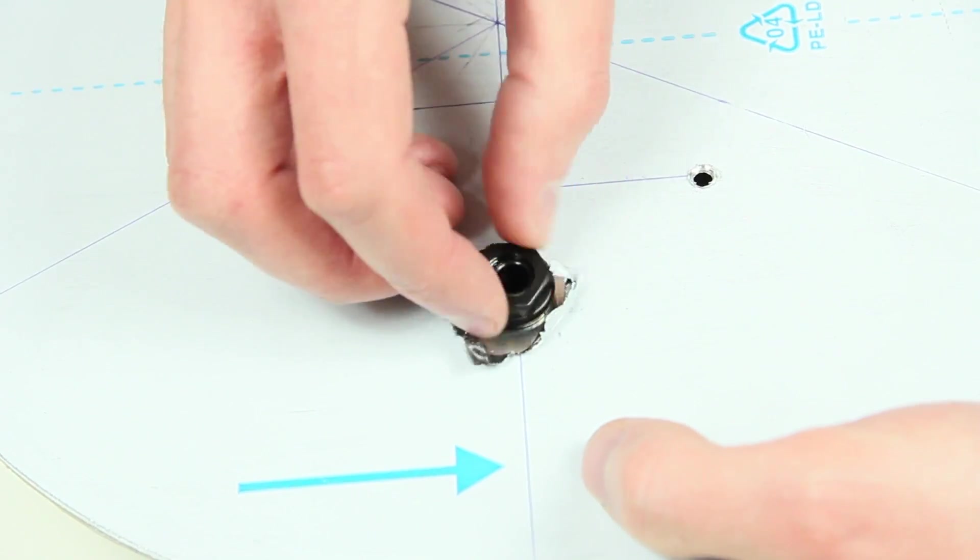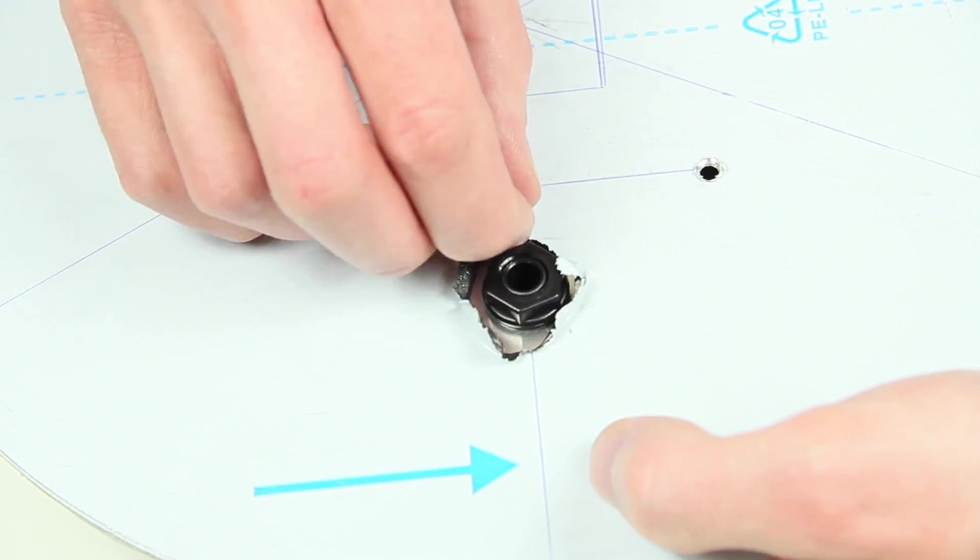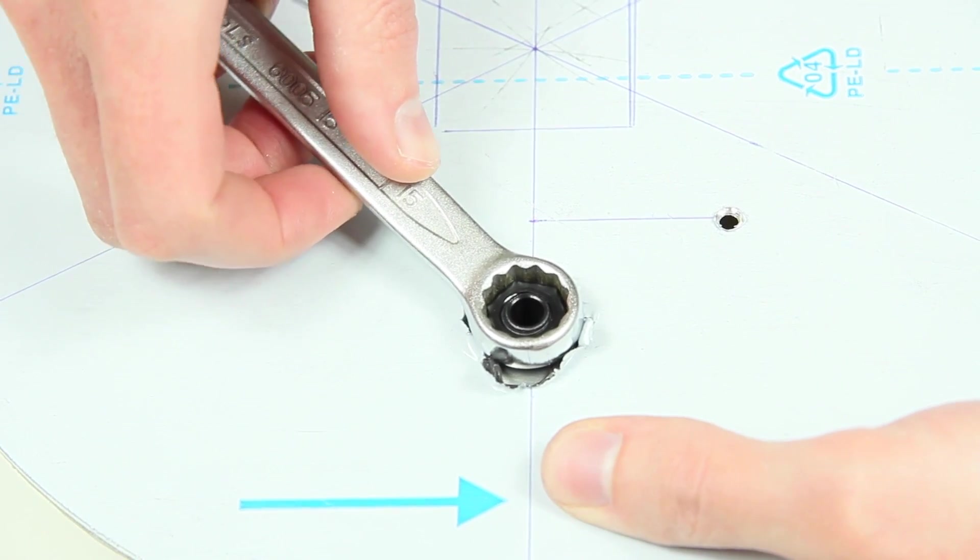The jackplug and its nut are only made out of plastic in this case. So be very careful when using a wrench.